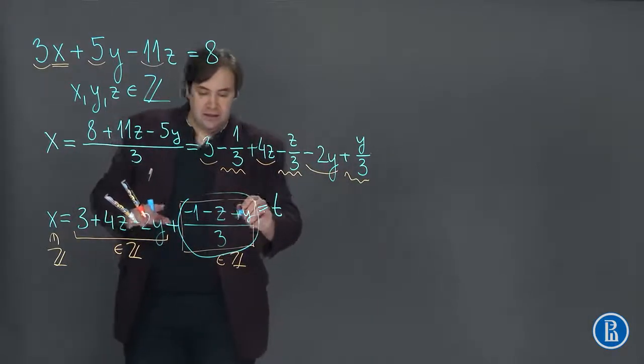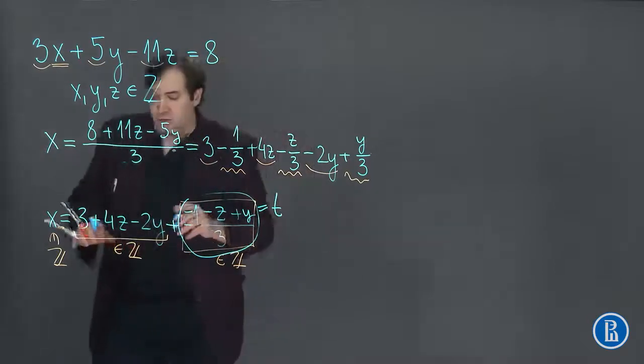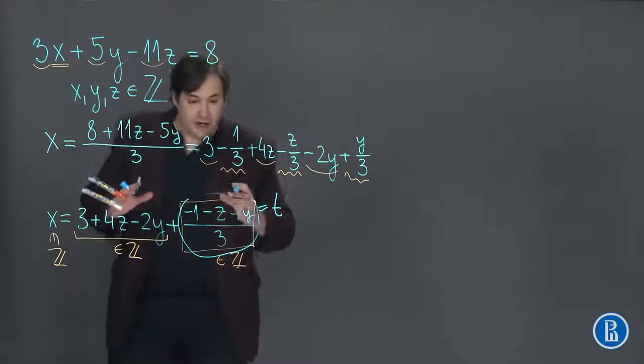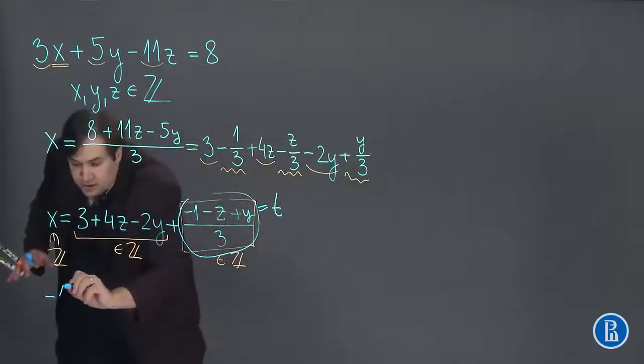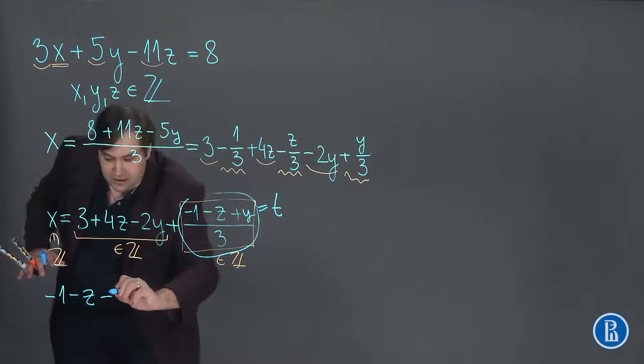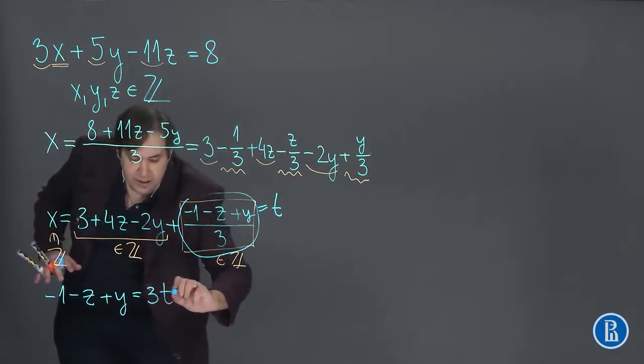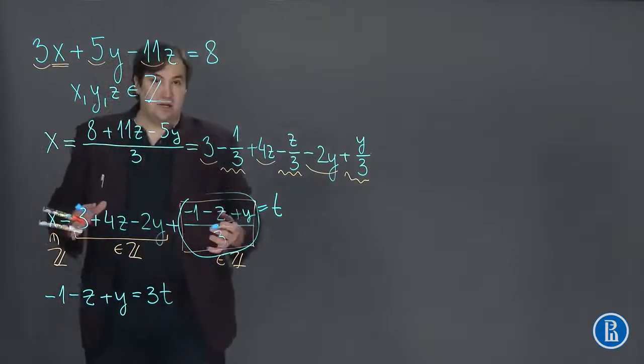So the next step is to take this equality and write it as a separate equation. Minus 1 minus z plus y is equal to 3t. It is another equation.